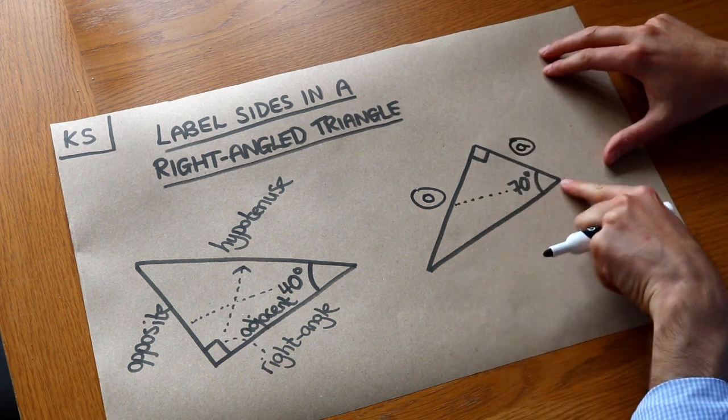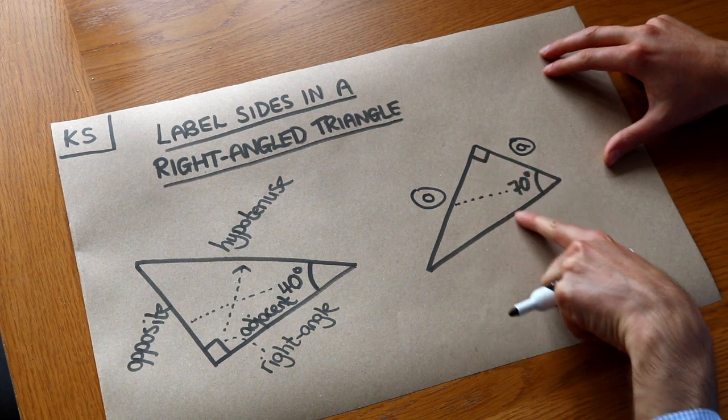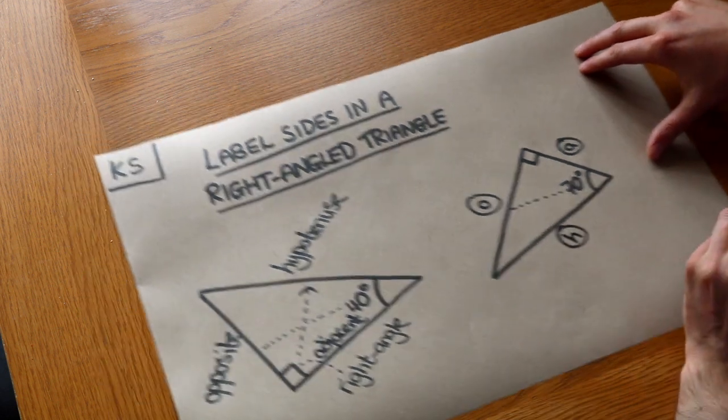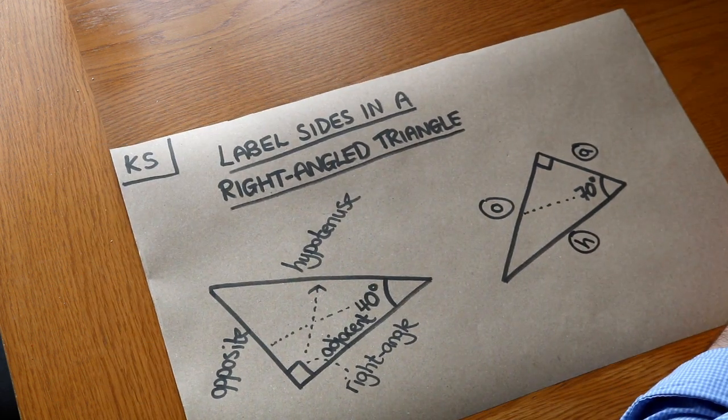And this longest side of the right-angled triangle, which is always opposite that right angle, that is known as the hypotenuse. And that's all you need to know for the moment.